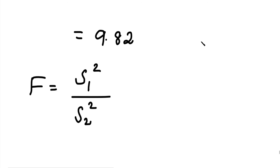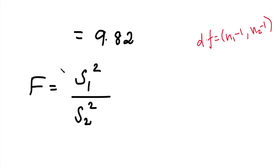For the F formula, degrees of freedom are (n1 minus 1) and (n2 minus 1). If S2 squared is greater than S1 squared, then we use S2 squared divided by S1 squared in the formula, and the degrees of freedom become (n2 minus 1) comma (n1 minus 1). Substituting n1 and n2 gives us the degrees of freedom. We substitute S1 squared and S2 squared and simplify using a calculator.